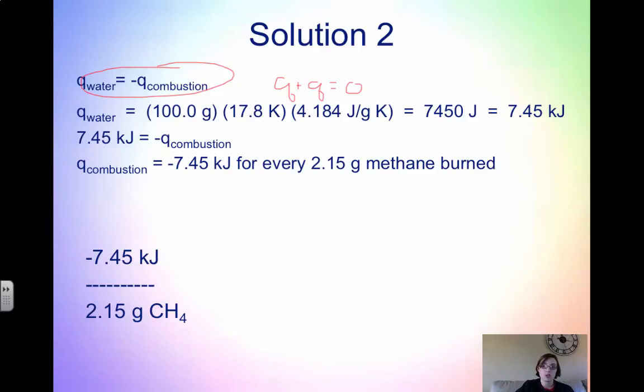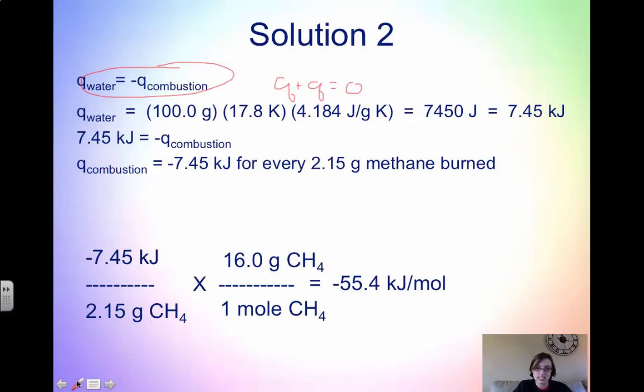So let's start with this for every statement here. Negative 7.45 kilojoules for every 2.15 grams of methane. Now you guys know how to get from grams to moles. So for every 16 grams of methane, we have one mole of methane. And that actually gets us negative 55.4 kilojoules per mole.